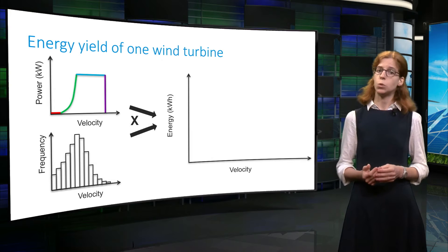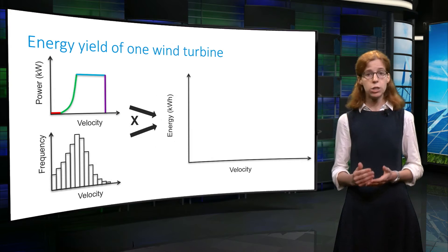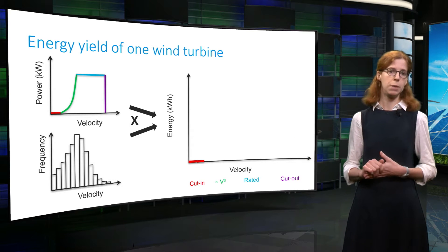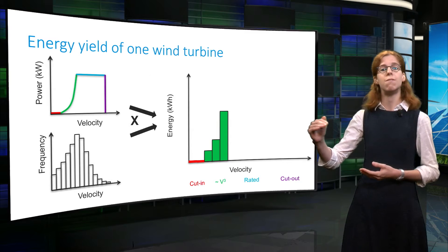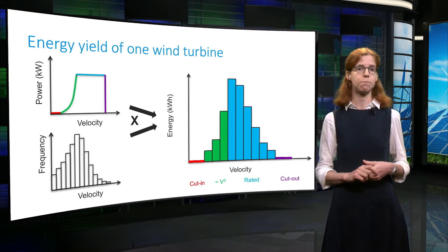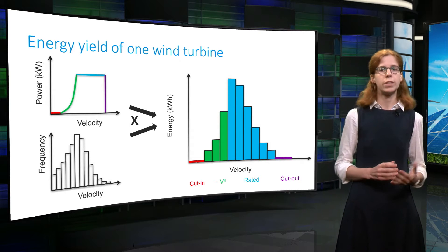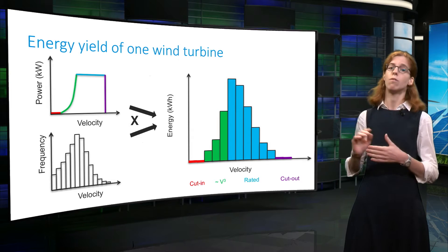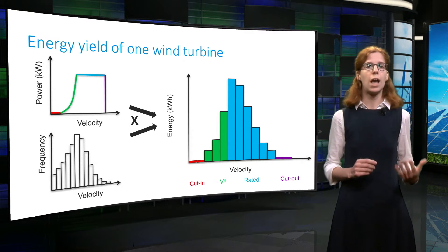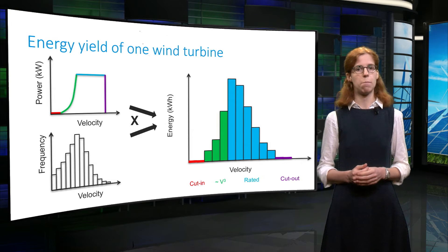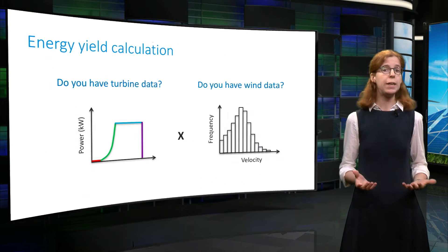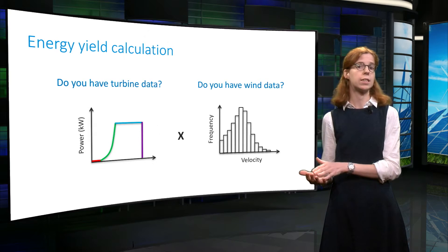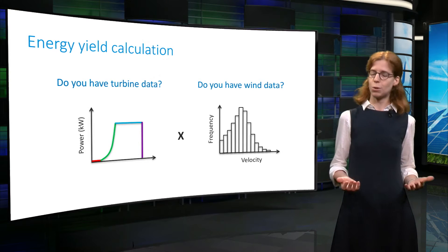Then the product of these two curves gives, for each wind speed, the total power produced — zero below a certain speed, and then positive values for the other ranges of wind speeds. If the histogram contains the wind characteristics over an entire year, then the integral of the power plot on the right-hand side gives the total annual production of the wind turbine. So generally speaking, if we know the power curve of the turbine and we know the wind characteristics at the location of the turbine, then we can compute the energy yield.